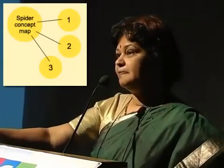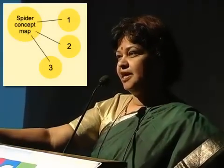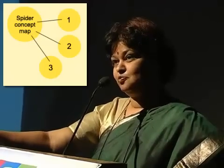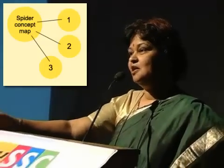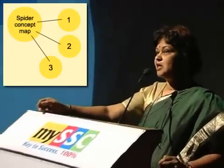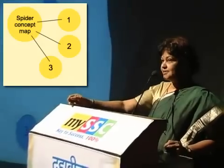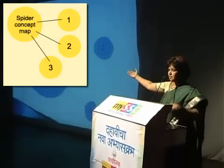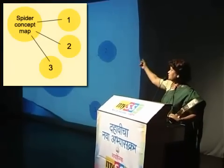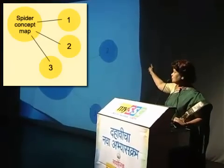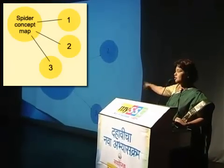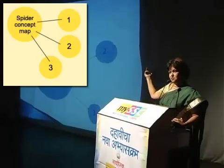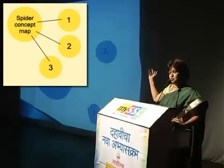Spider concept map — different types of maps are introduced in the books. For example, classification of metals: you can write in one state — metals, non-metals, metalloids, properties, and daily application. This is how you use the chapter.